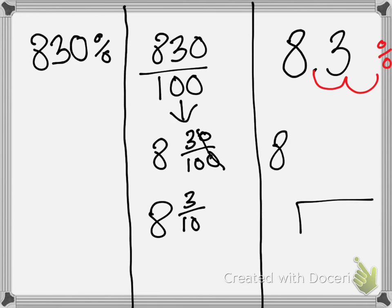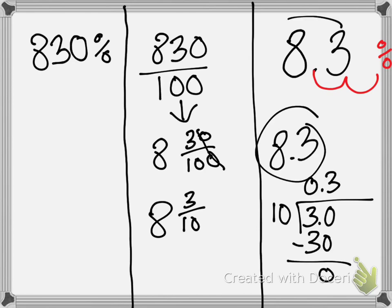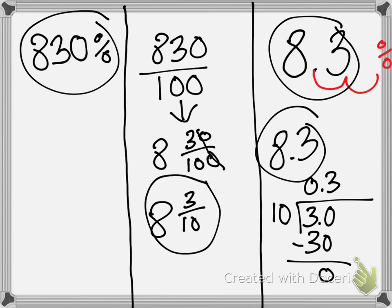Just to check our math, let's long division this. We're going to get 8 point. We got our 3 and our 10. 0 goes there. We get 30. 8.3. Same thing. Everywhere we go, all the same thing.